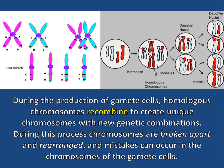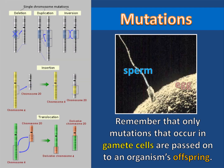During this process, chromosomes are broken apart and rearranged, and mistakes can occur in the chromosomes of the gamete cells. Remember that only mutations that occur in gamete cells are passed on to an organism's offspring.